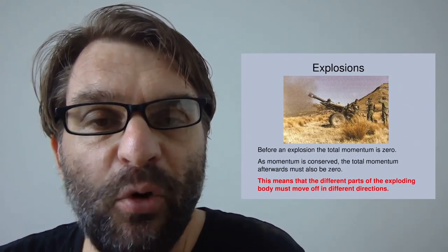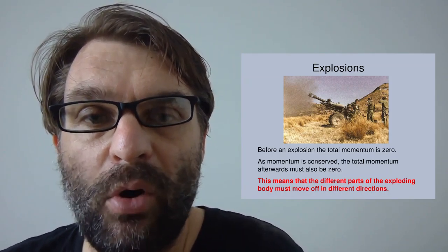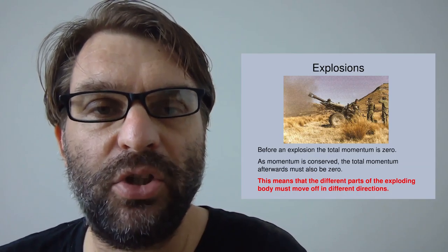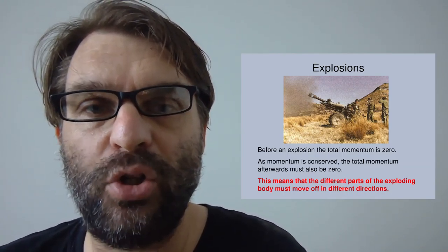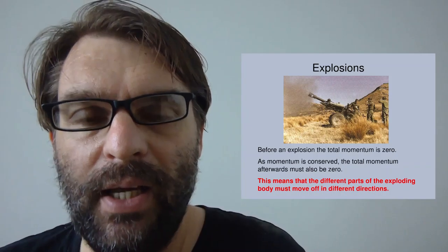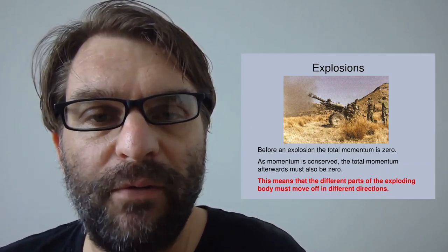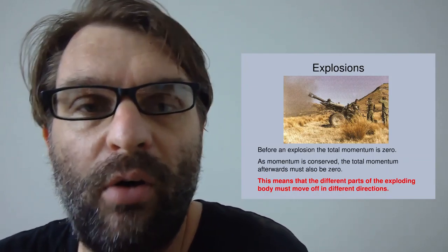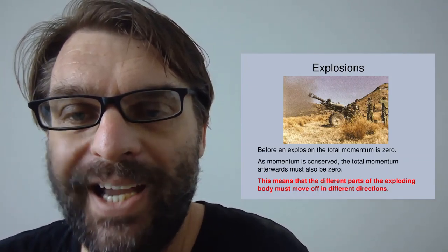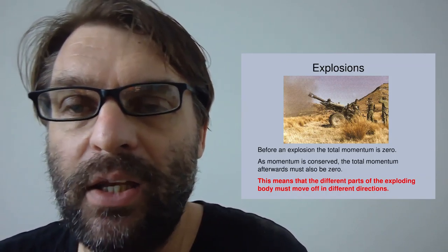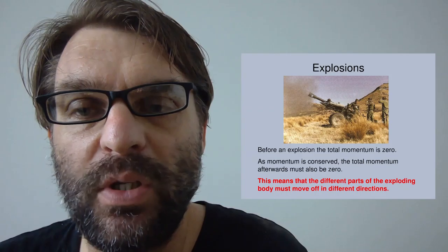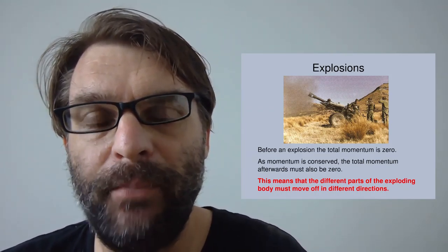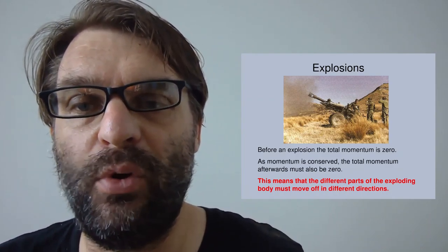Explosions are an example of this. Before an explosion, the total momentum of the cannon and the cannon shell is zero. As momentum is conserved, the total momentum afterwards — after the explosion — is also zero. This means that different parts of the exploding body must move in different directions, and you see that in the recoil of a cannon. The projectile goes forward and the cannon recoils backwards — a positive velocity for the projectile and a negative velocity for the cannon.